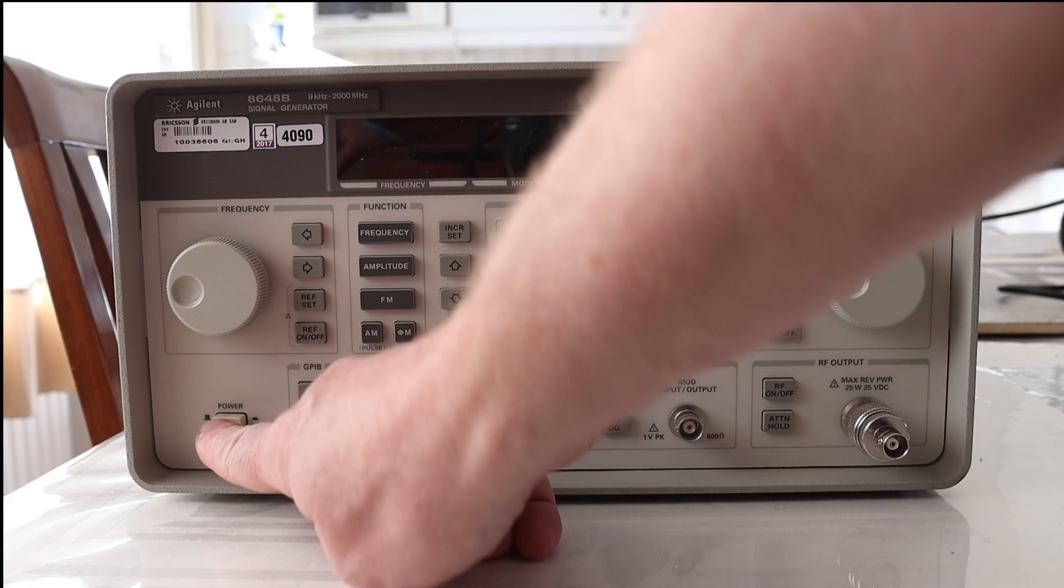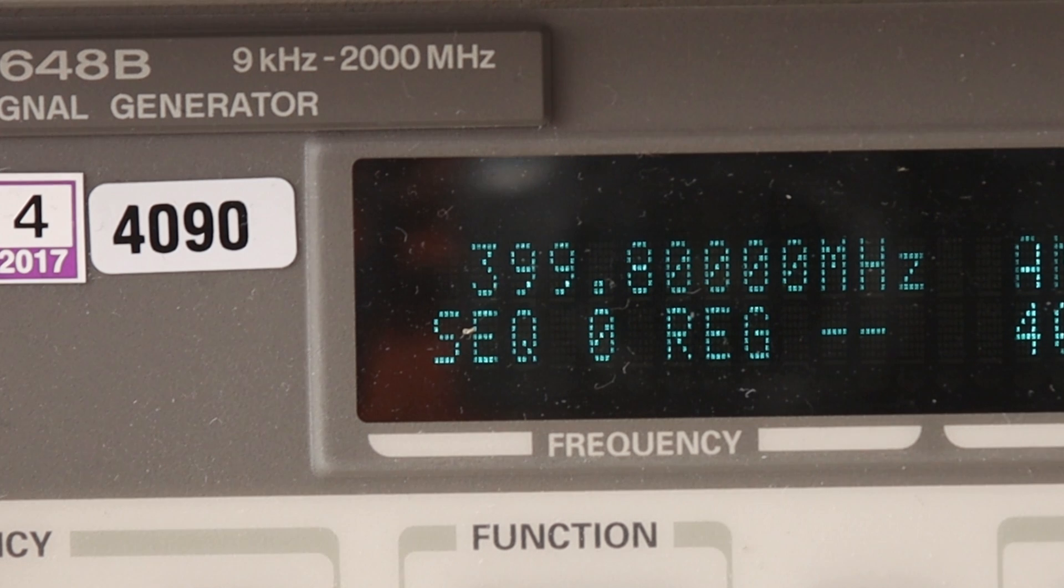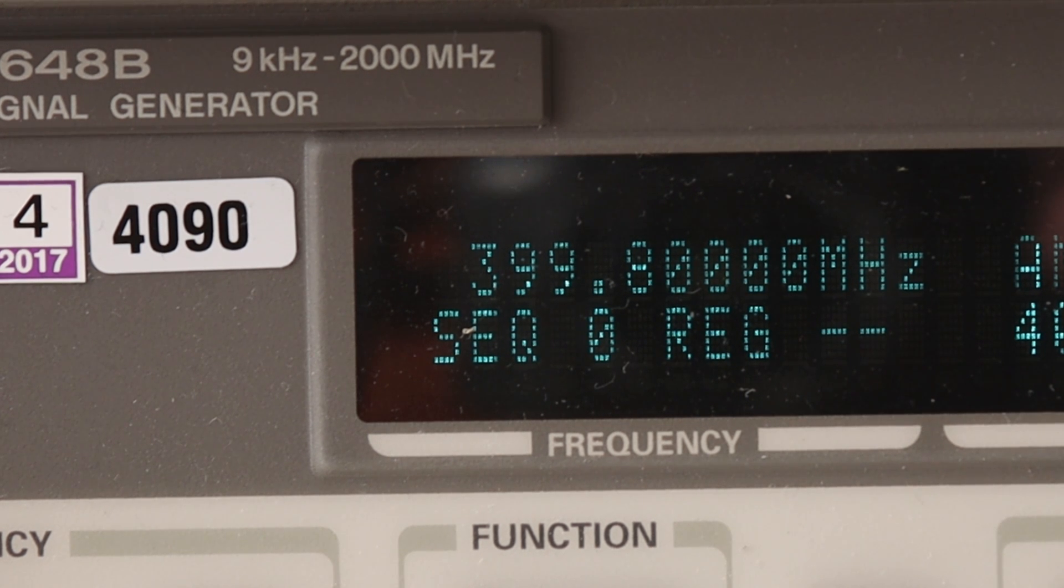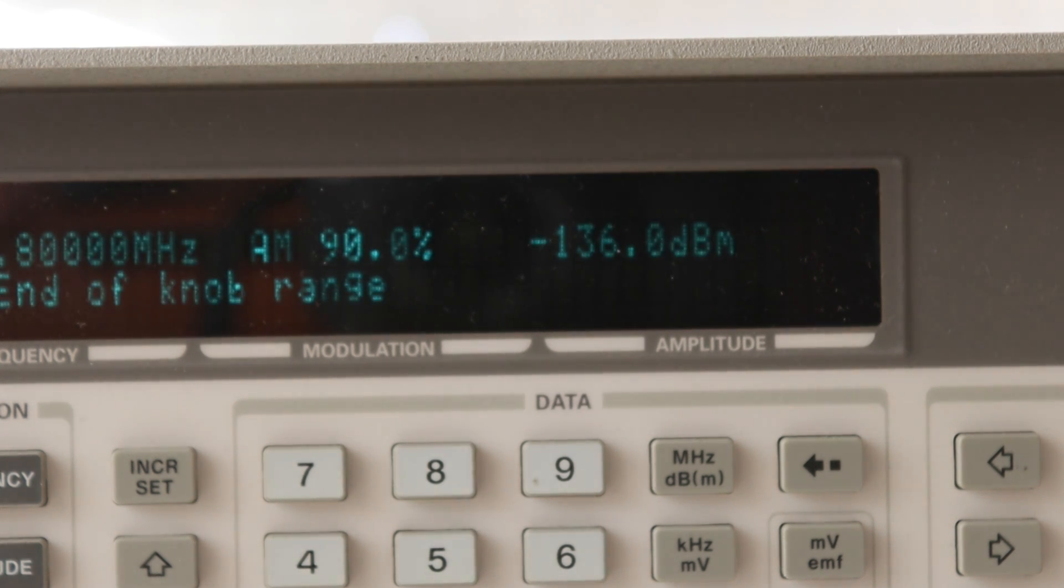The signal generator that I have can generate electromagnetic radiation with frequencies ranging from 9 kHz all the way up to 2 GHz.